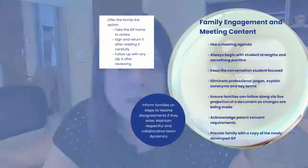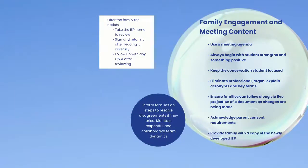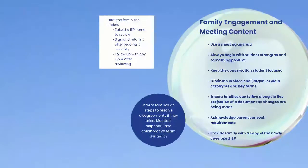For content covered in meetings, always use a meeting agenda and begin with student strengths and something positive. Keep the conversation student-focused, eliminate jargon, and explain acronyms. Ensure families can follow along via live projection of documents as changes are made. Acknowledge parent consent requirements and provide the family with a copy of the newly developed IEP. Offer the family the option to take the IEP home to review in depth, sign, and return it after reading carefully with any follow-up questions. Inform families on steps to resolve disagreements and maintain respectful, collaborative team dynamics.